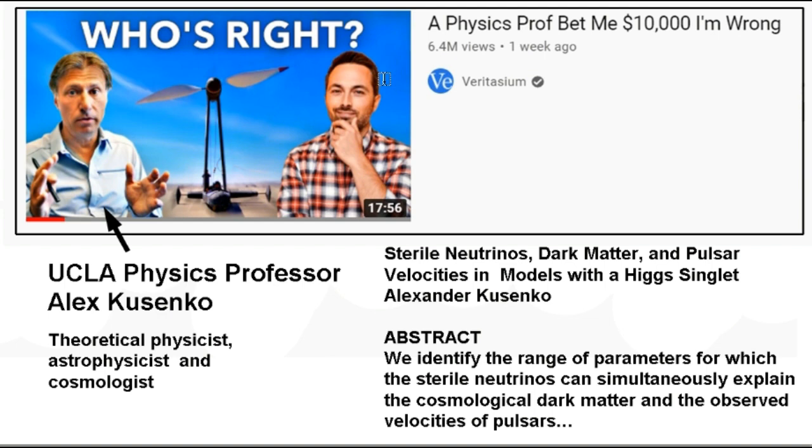This guy, Alex Kusenko, I did some looking up on him, and he's a very smart guy. He's a theoretical physicist, astrophysicist. He's written articles like sterile neutrinos, dark matter, and pulsar velocities in models with Higgs singlet. So, he's no dummy.